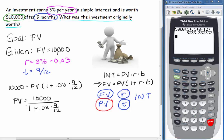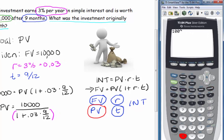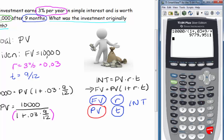We have to be careful entering this into the calculator — whenever I have more than one thing in the denominator, I need to put parentheses around it. So we type: 10,000 divided by (1 plus 0.03 times 9 divided by 12). We get a present value of $9,779, and rounding to the nearest cent gives us $9,779.95. That's how much was originally invested.